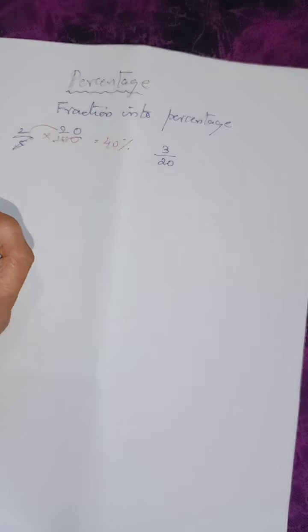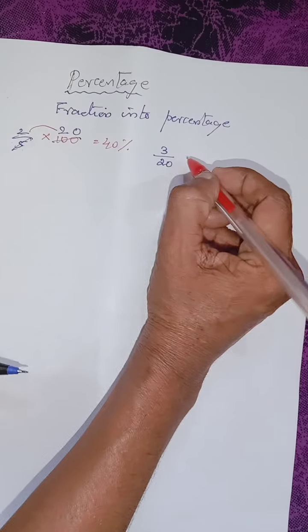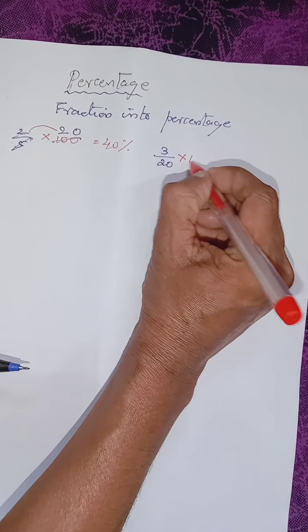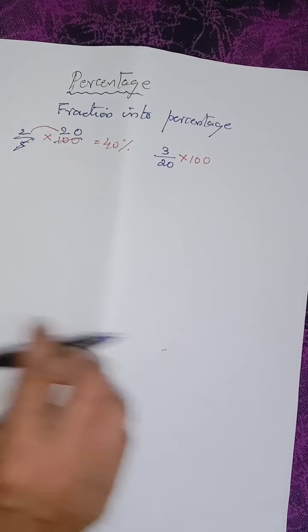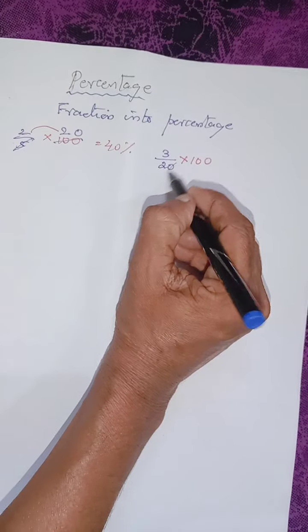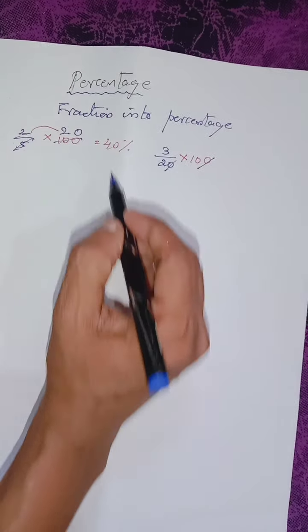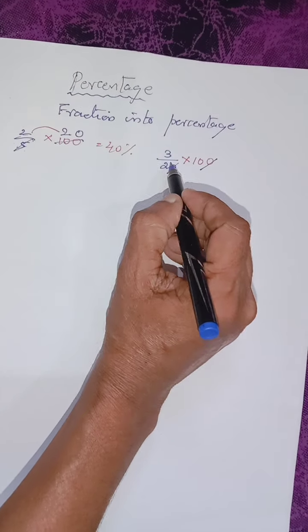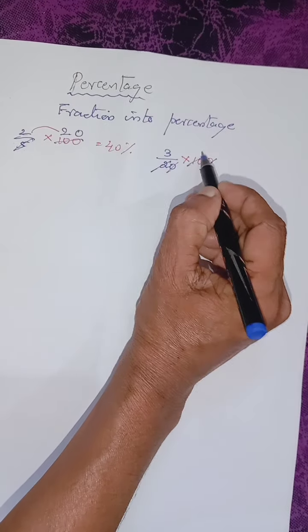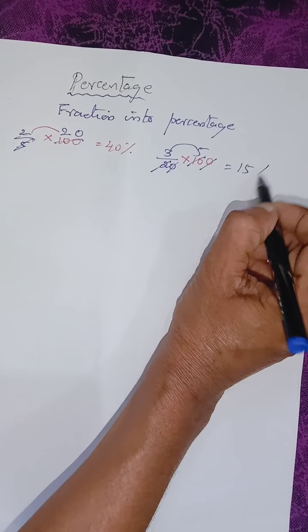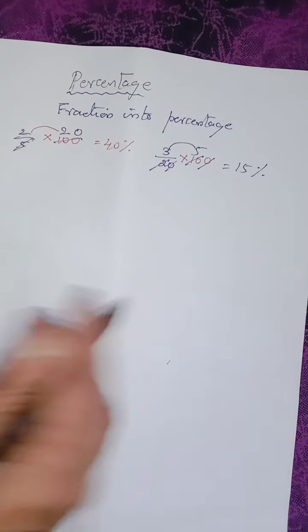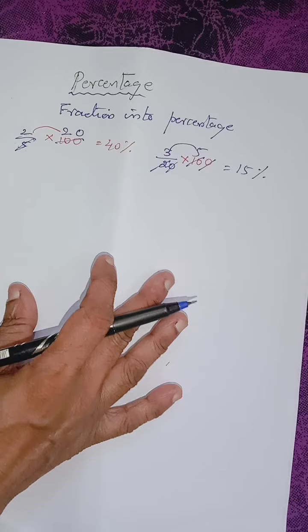Can we go through the second one? 3 by 20. So how to convert into percentage? Multiply with 100. Then the zeros will be cancelled, and in the second table, 10 is 5 times. So 5 into 3, we will be getting 15 percentage. Clear, children?